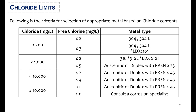SS grades are selected based on their chloride limits. When chloride is less than 200 mg/L and free chlorine is less than or equal to 2, grade 304 or 304L can be selected. For the same chloride limit with free chlorine less than or equal to 3, grade 304, 304L, and duplex 2101 can also be selected.